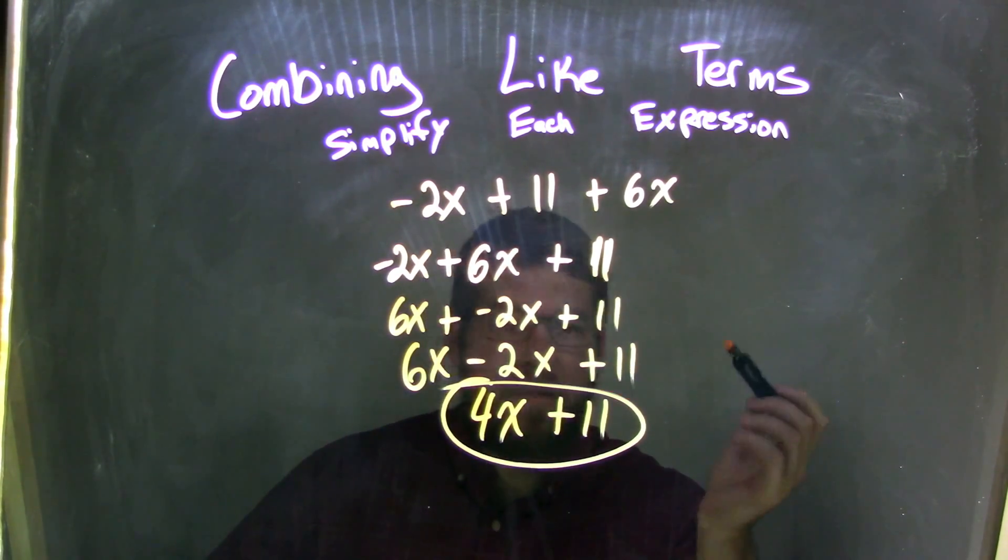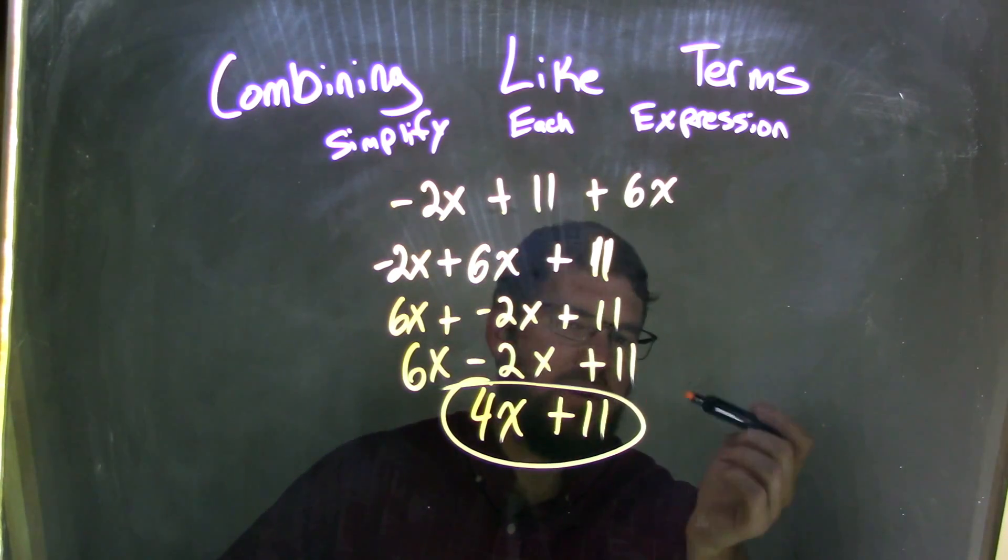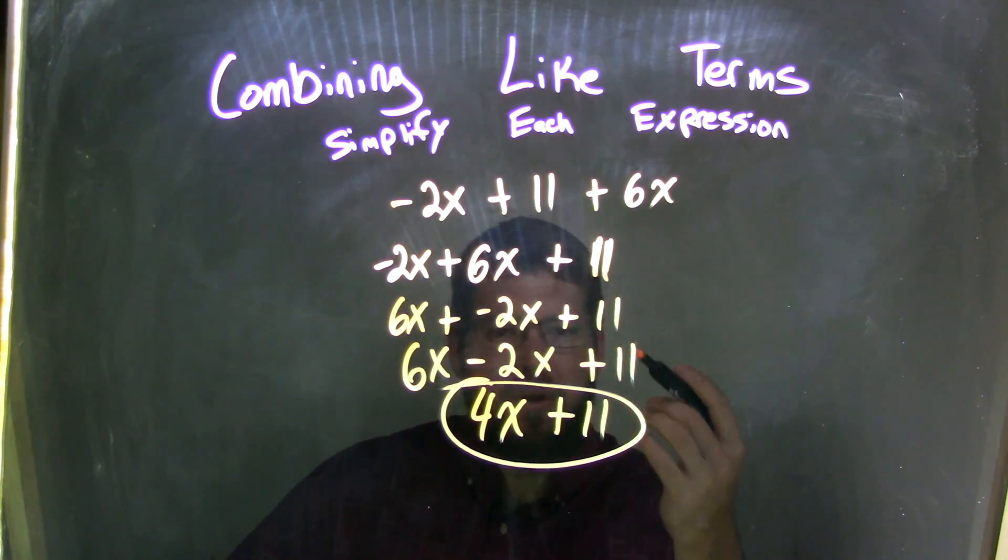Well, if at this point we can realize that negative 2x plus 6x is something we might be able to add together to get 4x, great, fantastic, you can go to the bottom.